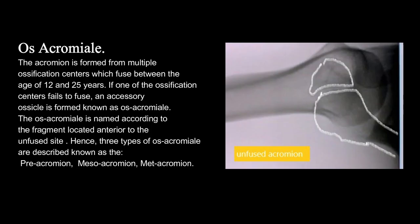The acromion is formed from multiple ossification centers which fuse between the age of 12 and 25 years. If one of the ossification centers fails to fuse, an accessory ossicle is formed, known as os acromiale. The os acromiale is named according to the fragment located anterior to the unfused site. Hence, three types are described: the pre-acromion, mesoacromion, and metacromion.